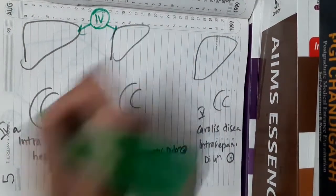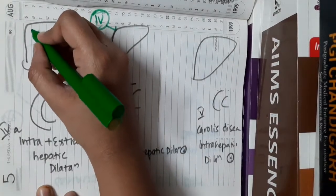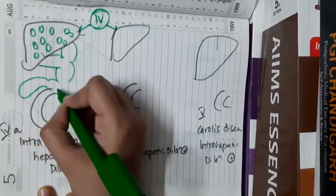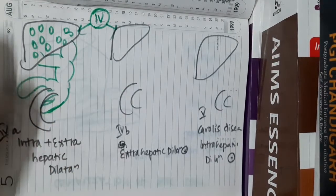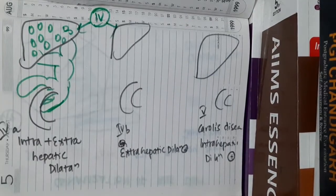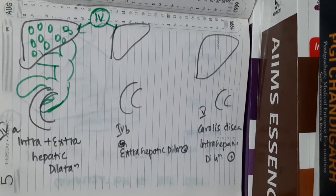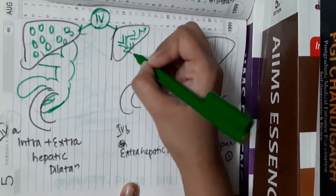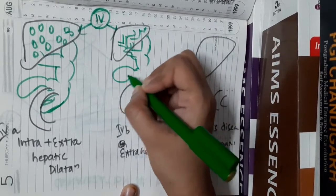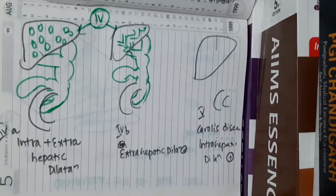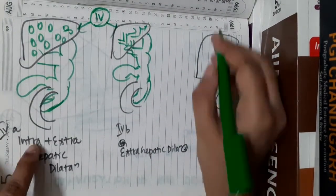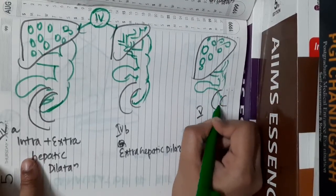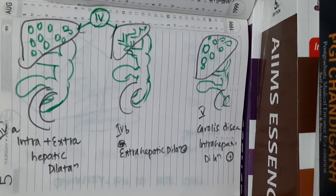Type 4 choledocal cyst is divided into 4A and 4B. In Type 4A, both intrahepatic and extrahepatic dilatation of the biliary apparatus are seen. In Type 4B, the intrahepatic part is completely normal and there is only extrahepatic dilatation. In Type 5, there is only intrahepatic dilatation and the extrahepatic biliary apparatus is completely normal.